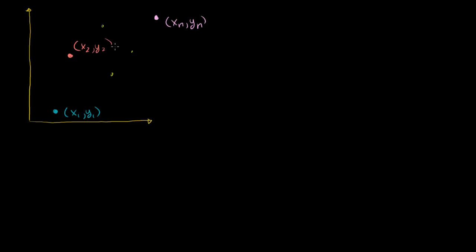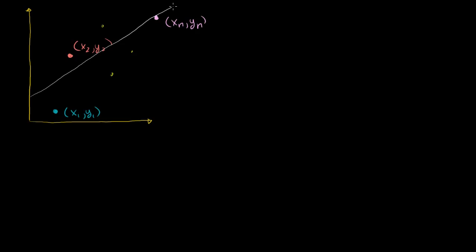So we have n points here. What I want to do is find a line that minimizes the squared distances to these different points. There's going to be some line, and I'm going to try to draw a line that approximates what these points are doing — something like that.